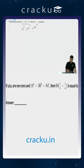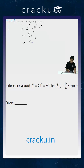Let us assume that all of them are equal to a constant K. So the value of A will be equal to logarithm of K to the base 14. Similarly, B is equal to logarithm of K to the base 36, and C is equal to logarithm of K to the base 84.